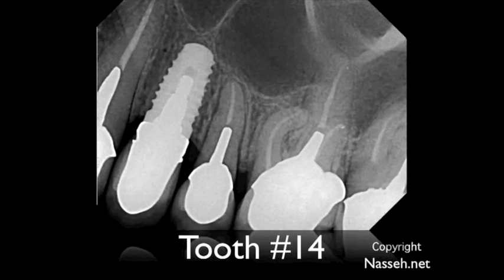This tooth was referred as tooth number 14 for retreatment or surgery apicoectomy due to pain, swelling, and sensitivity to percussion. The root canal therapy had been done 2-3 years back and a crown was placed on this tooth, but the patient had suddenly become sensitive with swelling in the buccal area of tooth number 14. The MB2 was particularly sensitive during palpation tests and the tooth itself was sensitive to percussion.